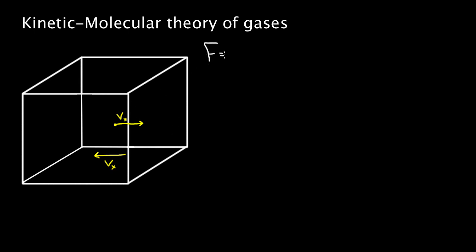Let's figure out what force that collision would exert, because if I can figure out the force on the wall, I can figure out the pressure — pressure is just force per area. Force equals MA, but it also equals delta P, the change in momentum over the change in time. That's an alternate way to write Newton's Second Law. The change in momentum is M delta V, where the change in velocity is actually two times Vx — it came in with Vx and left with negative Vx — so the magnitude of the change is 2Vx.